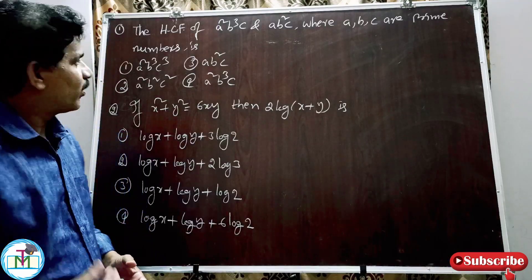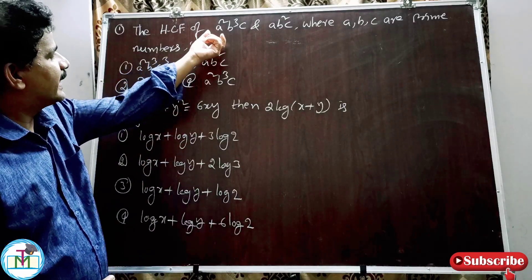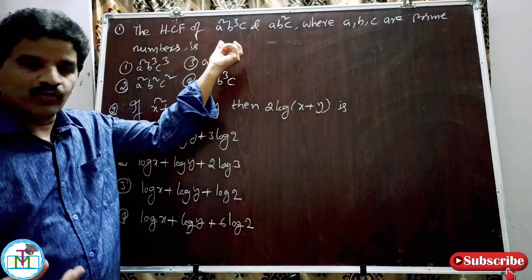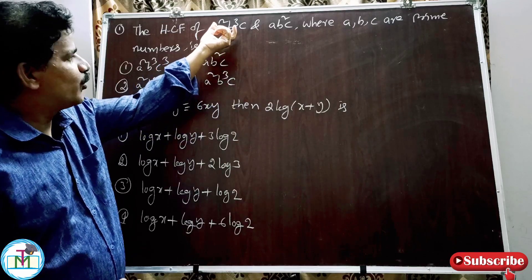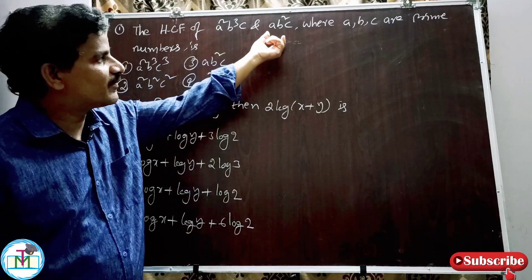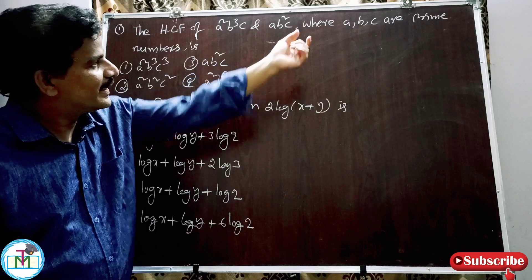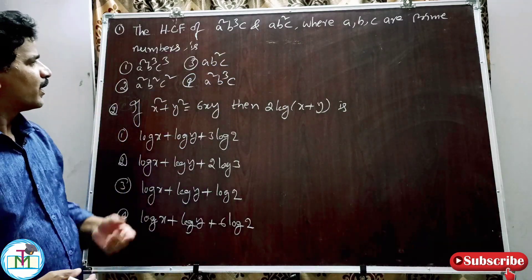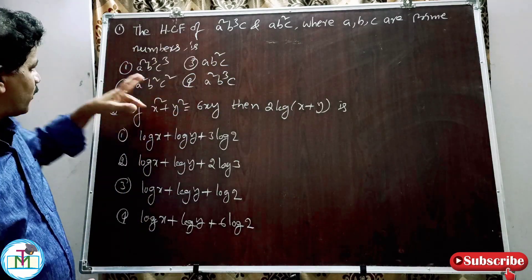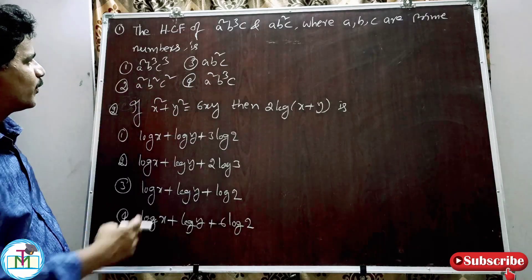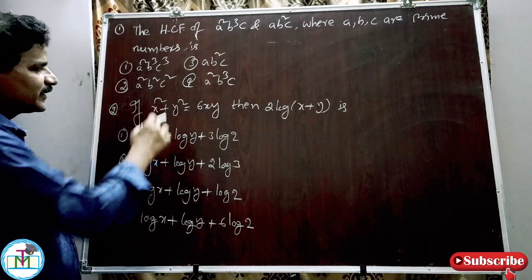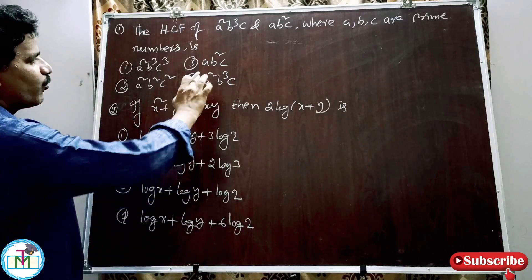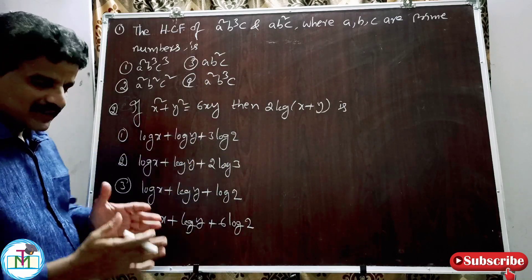Question number 1: Find the HCF of two numbers A²B³C and AB²C, where A, B, C are prime numbers. Options: (1) A²B³C³, (2) A²B²C², (3) AB²C, (4) A²B³C.